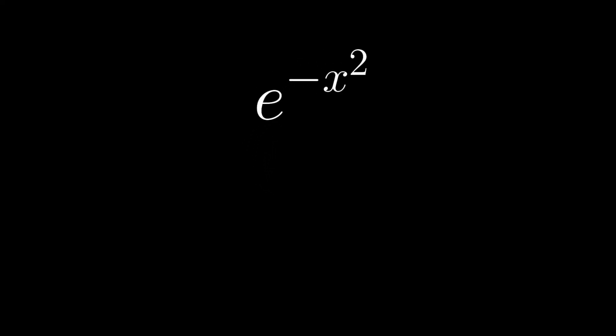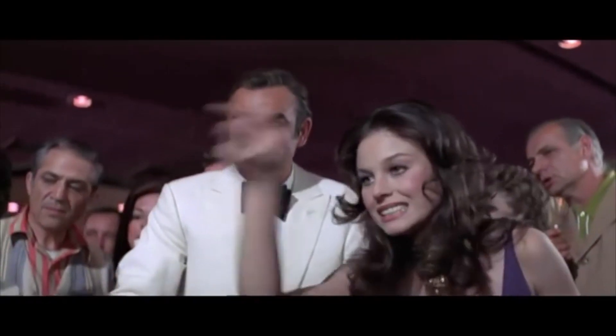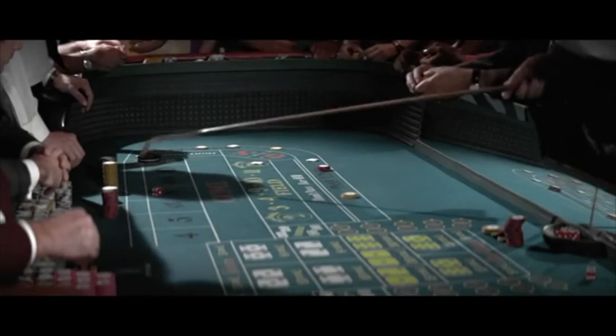But the square root of Pi shows up in some other, more surprising places. Take the Gaussian function, e to the minus x squared. It is important in Probability and Statistics, where it describes the distribution of random independent events like rolling dice.